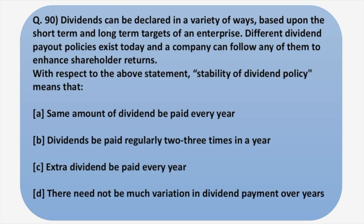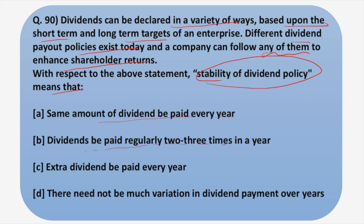Moving on to the last question. Dividends can be declared in a variety of ways based on short-term and long-term targets. Different dividend payout policies exist today. Stability of dividend policy means: same amount every year, dividends paid regularly two to three times a year, extra dividend paid every year, or no much variation in dividend payment over the years. The answer is option D — stability of dividend means there should not be much variation in the dividend payout to investors.